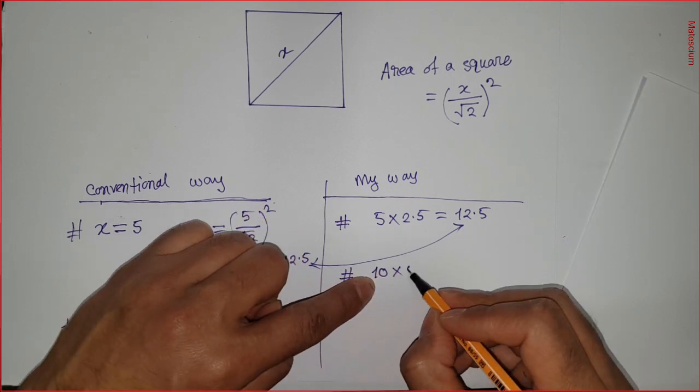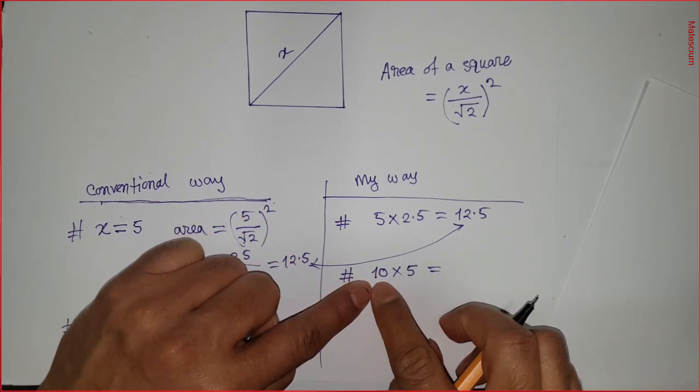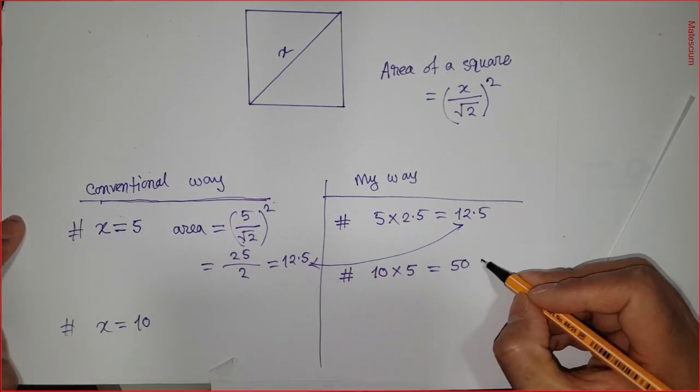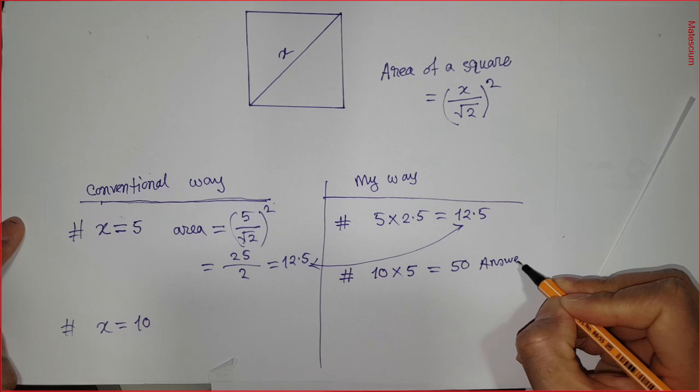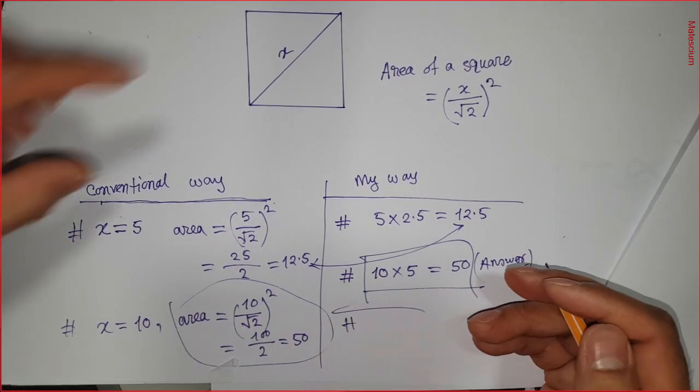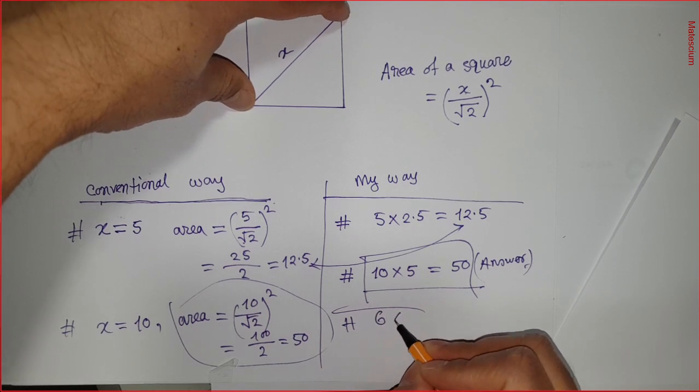If x equals 10, then write this 10 here and multiply by half of 10, which is 5. That means 10 times 5 is 50. Yes, 50 square centimeters or meters, whatever it is. This is the answer. Isn't it simple? Very simple.